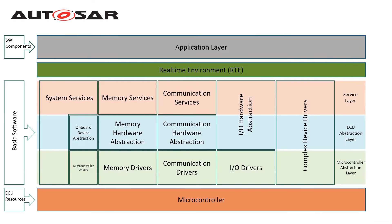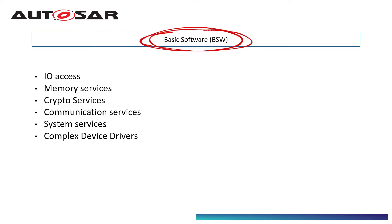The lowest software layer is the BSW layer. It is standardized software that provides services to AUTOSAR software components. It is also used to run the functional part of the software. BSW includes both standardized and ECU-specific components.